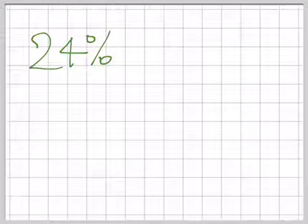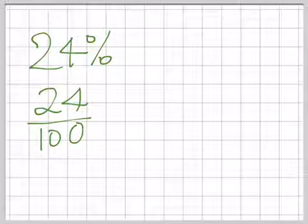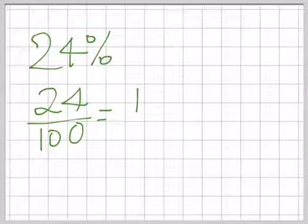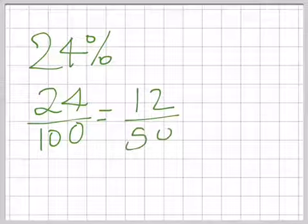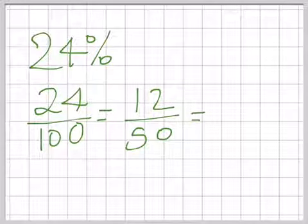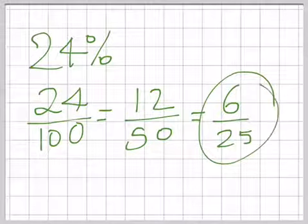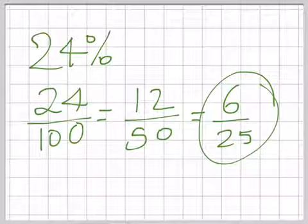If we have 24%, take our percentage, put it over 100, and then see if we can simplify. Now both of these are in the 2 times table so I can divide by 2 to give me 12 over 50. Remember whatever you do to the bottom you also do to the top, and then I can divide by 2 again to give me 6 25ths. That will be the simplest form of fraction that is equivalent to 24%.